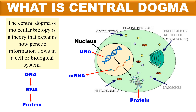So this is the central dogma: DNA forms RNA, and RNA forms the proteins, and these proteins carry out the different functions. The flow of information is from DNA, then RNA, then protein.